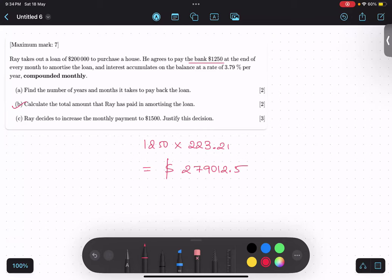223.21. Always remember take decimal also. Bank is not going to leave even a single penny. So, if you multiply this thing you will get 279,012.5. That much dollar amount you are going to pay. But the question is asking calculate the total amount that he has to pay. That's it.